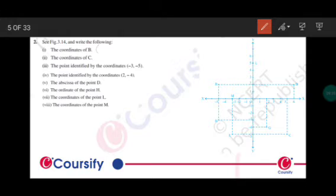B is minus 5 comma 2. Coordinate of C: that is 5 in x-axis and minus 5 in y-axis, so its coordinates are 5 comma minus 5.